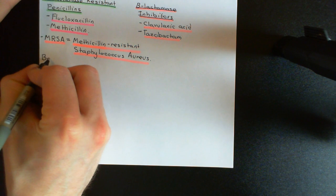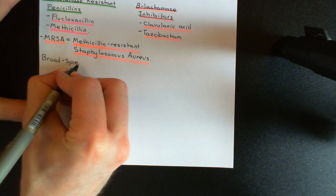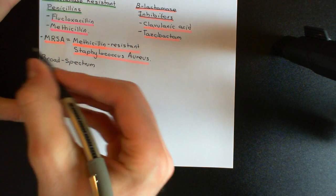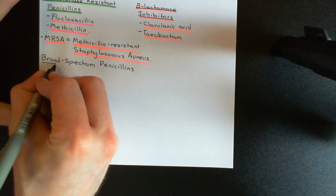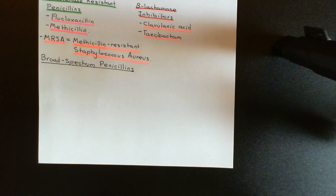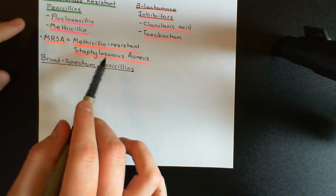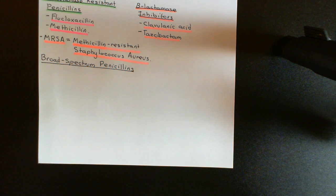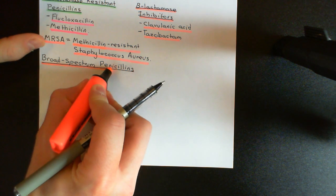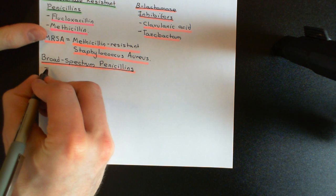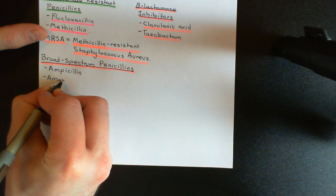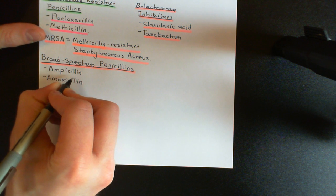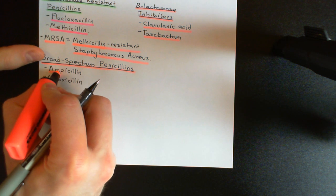The next category is what's called broad-spectrum penicillins. The reason it's called broad-spectrum is that it's going to work against a larger spectrum of bacterial species. These are going to be far better against gram-negative bacteria than the originals. However, these ones will be susceptible again to beta-lactamase breakdown — they don't have the property that the beta-lactamase resistant penicillins have. So these are often given in combination with a beta-lactamase inhibitor to protect them. Examples here are ampicillin and amoxicillin — modified penicillin antibiotics with greater efficacy against gram-negative bacterial species.